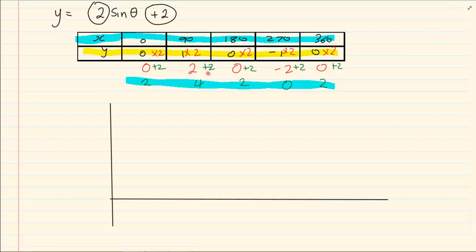Ok so we know that our highest point is 4. So we are going to go 1, 2, 3, 4. Our coordinates for x are going to be 90, 180, 270, 360.